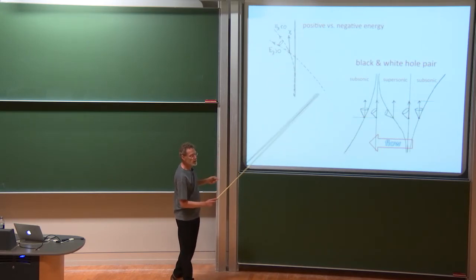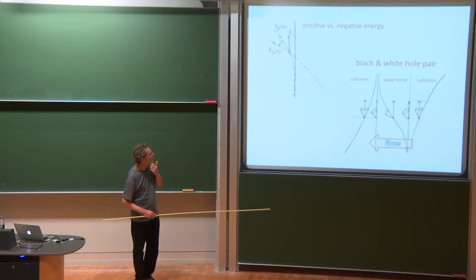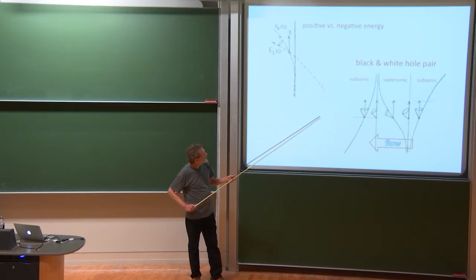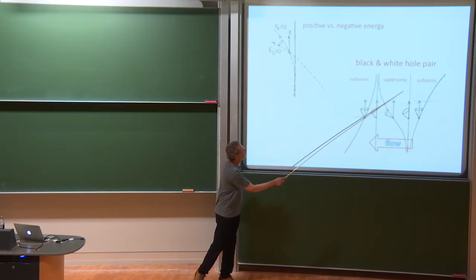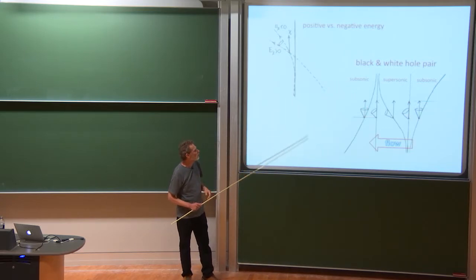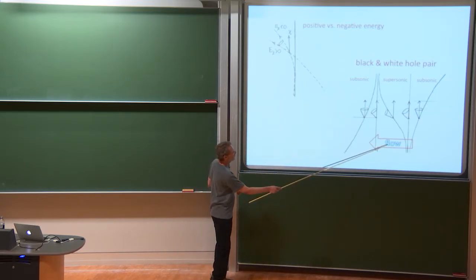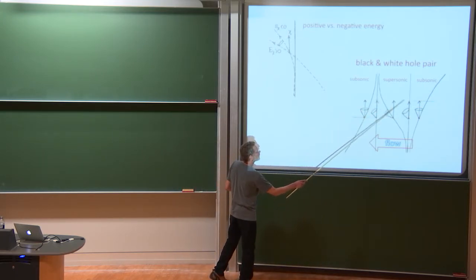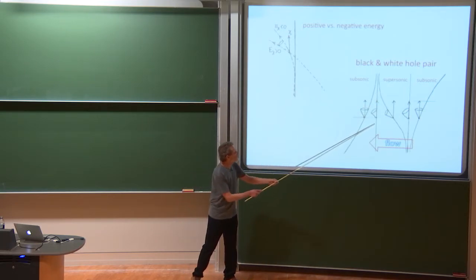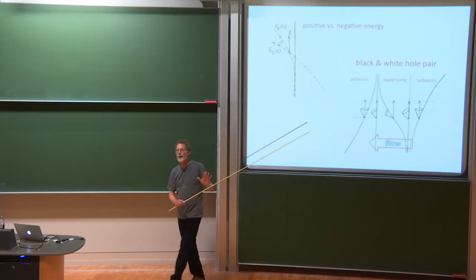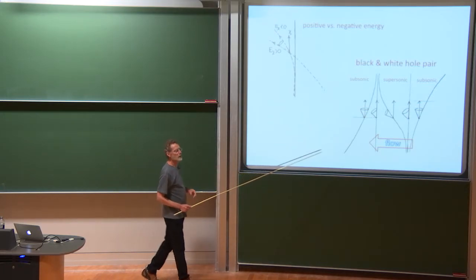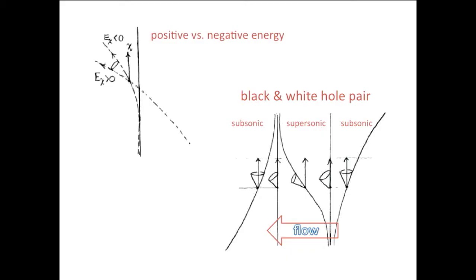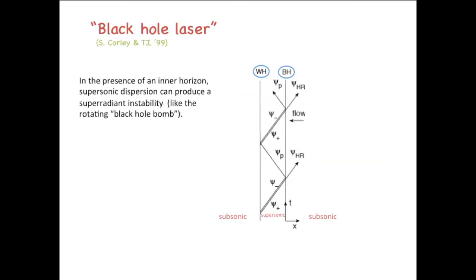Now, so far I've only talked about one horizon, but in the laboratory experiment, in fact, it turns out it's natural to create a flow that has a second inner horizon or a white hole horizon where the flow velocity once again drops below the speed of sound. And that creates an ergo region between the two where the flow is supersonic, and inside of which negative energy modes are trapped, like they're trapped in the ergosphere of a rotating black hole. And that means, actually, that there's a super radiant instability that can happen here, which Steve Corley and I call the black hole laser.